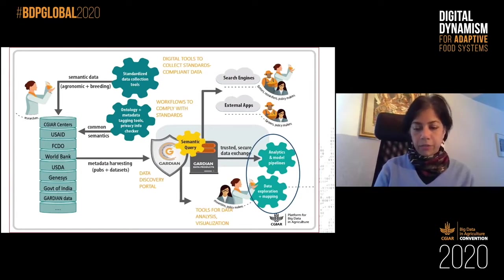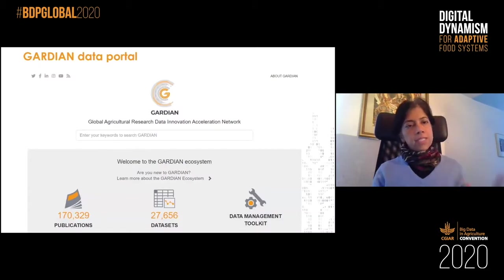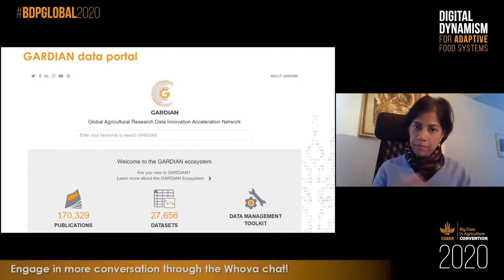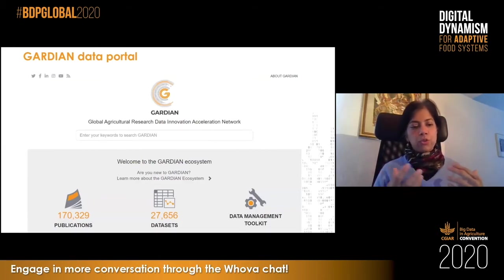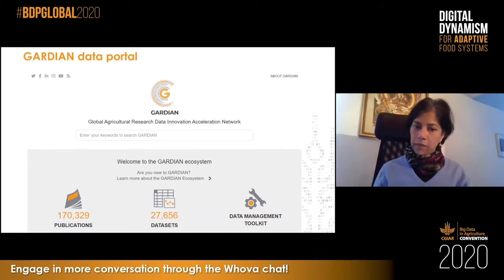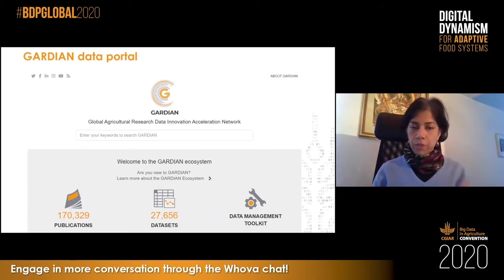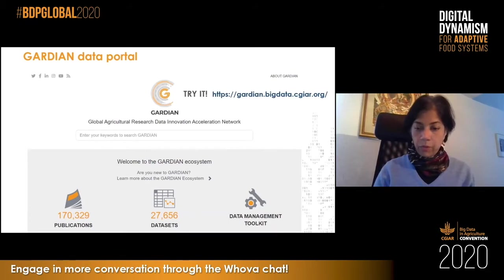That's the Guardian Data Ecosystem. I'm going to start diving into pieces of this now. We'll start with the heart of it, which is the data discovery portal. Here's the homepage of Guardian. At the top of the homepage, you'll see that we provide access to about 170,000 publications and almost 28,000 datasets. There's also a data management toolkit icon — by clicking on that you will see all of the numerous tools and services that are available to you. Here's the URL for that, and we'd love to hear from you if you have feedback.